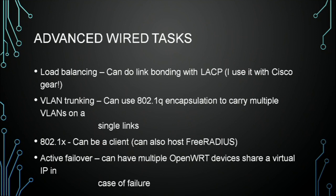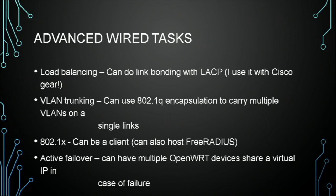The more advanced stuff: you can do load balancing. LACP is supported — I actually use it with Cisco gear. I have an LACP bond of two chords into my Cisco switch and they're just very happy together. You can do VLAN trunking with 802.1Q, which I also do with my Cisco switch. That's a good thing to have when you're talking about an enterprise network — you can have multiple routes, isolation, and do a whole lot more if you can get encapsulation to the switch. It can be a client for 802.1X on the wired side, and it's got a bunch of other things it can do with 802.1X on wireless.